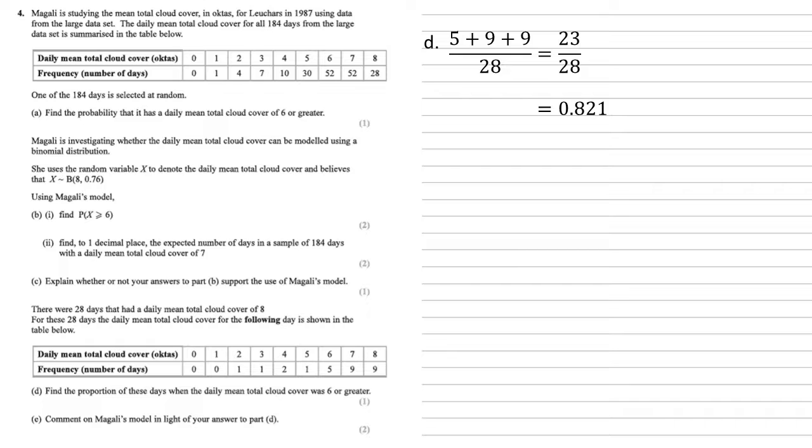Now for part E we need to comment on Magali's model in light of our answer to part D. Well, we've got 0.821 as our answer for part D, but the original model said 0.7033 for the probability of 6 or more. These are very different, so this suggests that Magali's model may not be suitable.